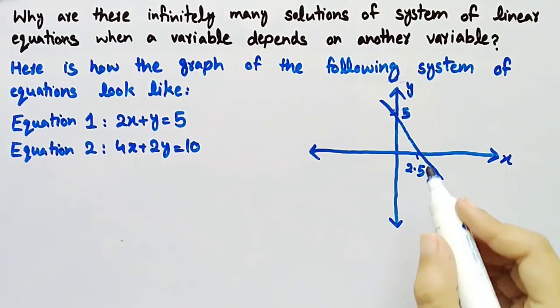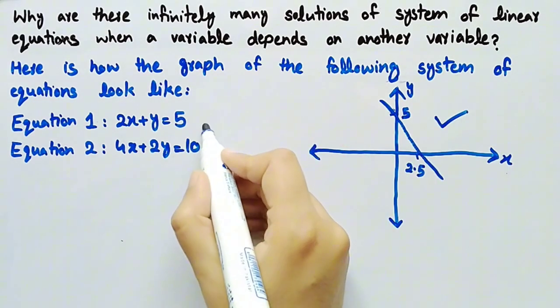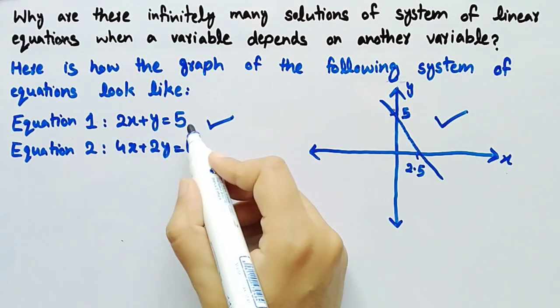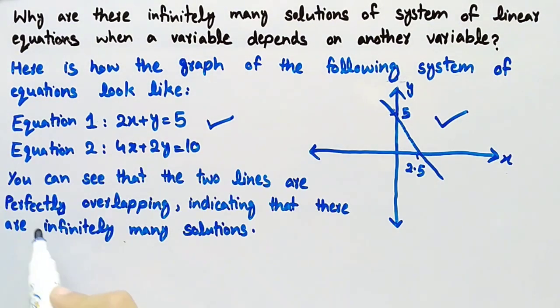Here is how the graph of the following system of equations look like. You can see that the two lines are perfectly overlapping, indicating that there are infinitely many solutions.